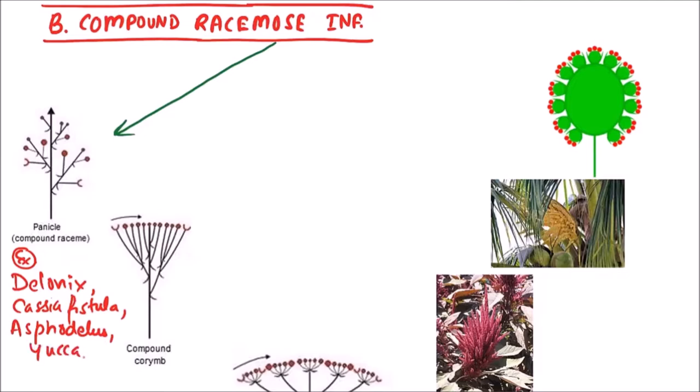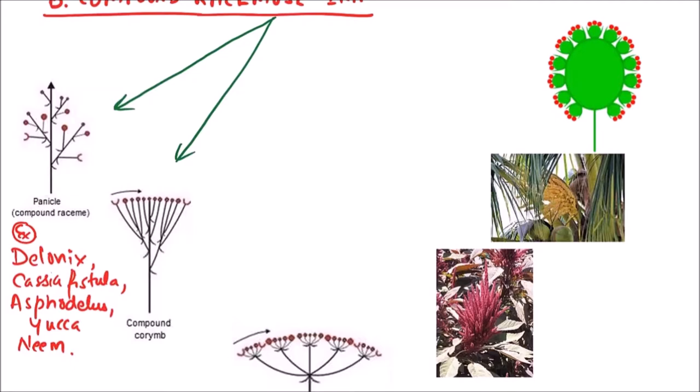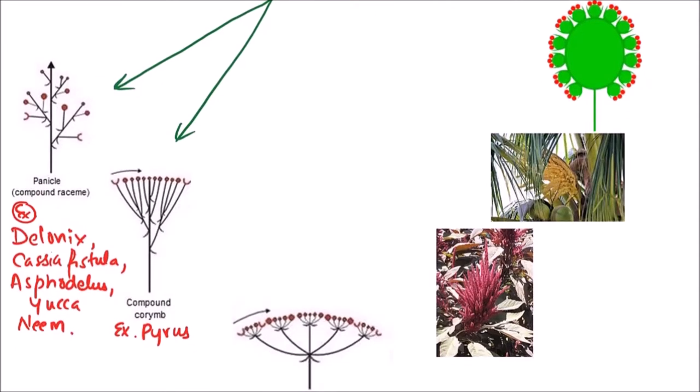The second one is compound corum, also known as corum of corums. The examples include Pyrus, cauliflower, and candy tuft.